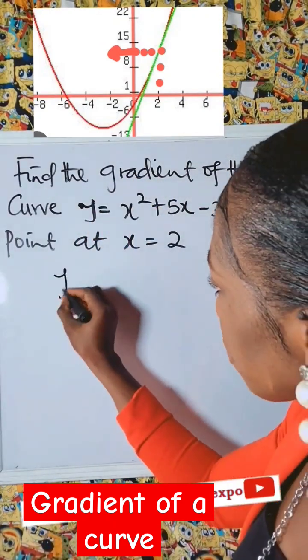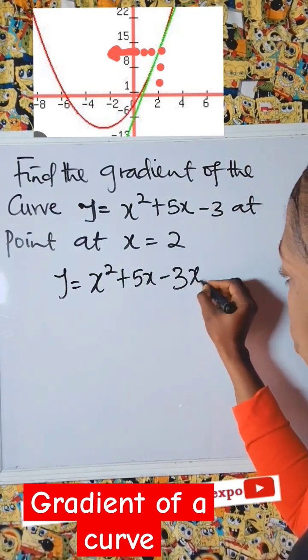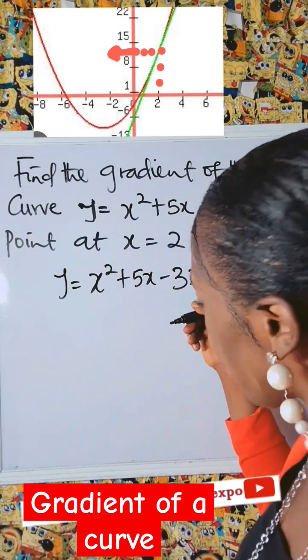Remember this function is the same as y equal to x squared plus 5x minus 3. This is 3x raised to power 0. N raised to power 0 is 1.